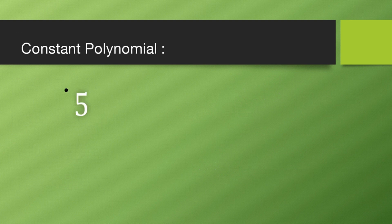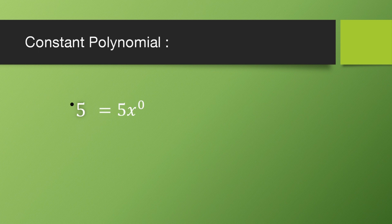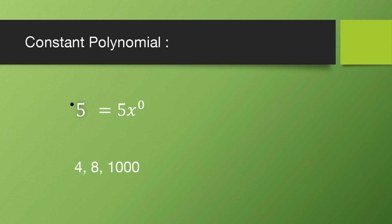Next, let's look at constant polynomials. Take the number 5 as an example — is it a polynomial? Yes, because you can write 5 as 5·x⁰, since x⁰ = 1. Any constant number like 4, 8, or 1000 can be expressed in this form, so any constant is a polynomial, and it is called a constant polynomial.